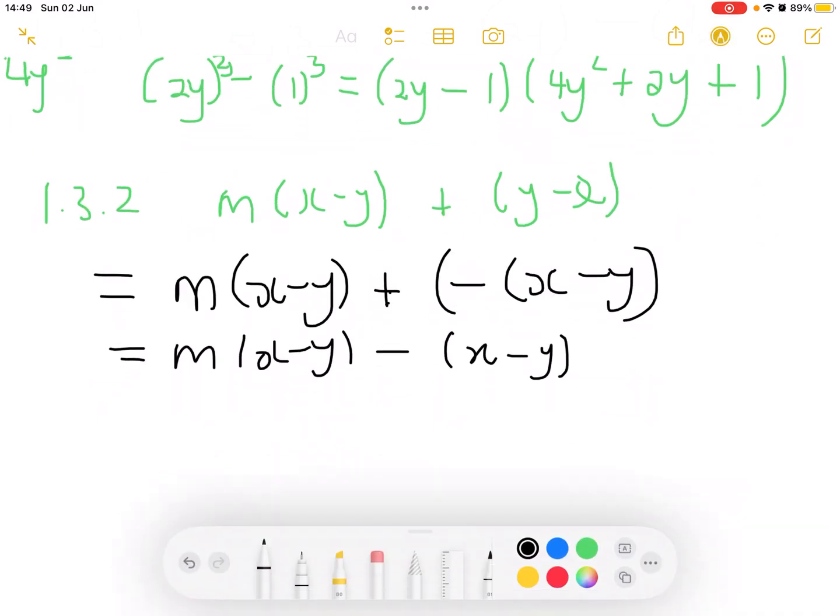Factoring out the negative means that this positive needs to multiply with the negative. Then now you have m times x minus y minus x minus y. Then you can now easily factorize this x minus y. When you factorize it, you are left with x minus y times m minus 1.